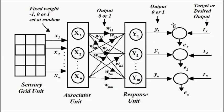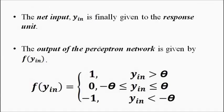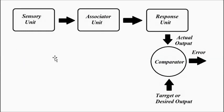The outputs are given to comparators. The output of the perceptron network depending on the net input or induced local field of the response unit can take three values: 1, 0, or minus 1. When the net input is greater than the threshold theta, the output is 1. When it lies between minus theta and theta, the output is 0. When it is less than minus theta, the output is minus 1. This is the whole operation of the perceptron network across the sensory, associator, and response units.